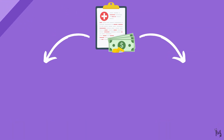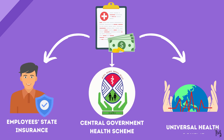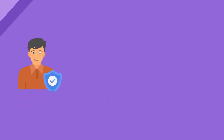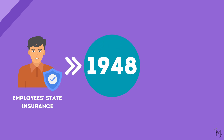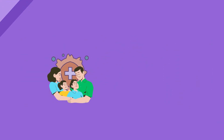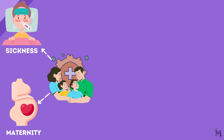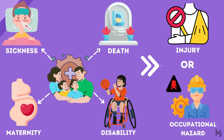Coming to health insurance schemes, we have the Employee State Insurance, the Central Government Health Scheme, and the Universal Health Insurance Scheme. The Employee State Insurance scheme was launched in the year 1948, a year after we got our independence. This insurance is a social security scheme which will protect workers and their families in cases of sickness, maternity, disablement, or death due to an employment injury or occupational hazard.